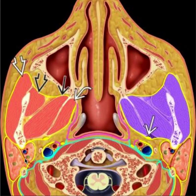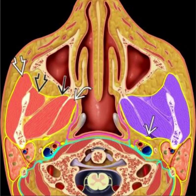More posteriorly we have the parotid space, and medial to that we have the carotid sheath. Additionally, we have the parapharyngeal space, which is the area between the parotid and the carotid sheath.